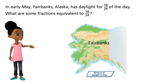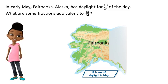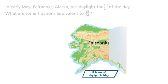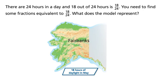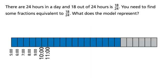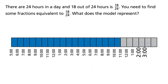In early May, Fairbanks, Alaska has daylight for 18 24ths of the day. What are some fractions equivalent to 18 24ths? Fairbanks has daylight 18 hours a day in May. Why is this 18 24ths of a day? There are 24 hours in a day, and 18 out of 24 hours is 18 24ths.